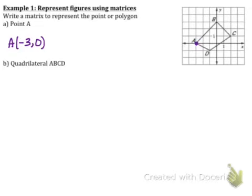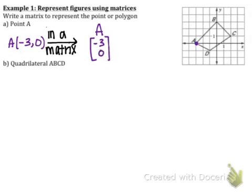So how would we write this in matrix form? Point A written in a matrix has two brackets, and the negative three goes on top and the zero goes on bottom. We took the x and the y from point A — x is negative three and y is zero — and wrote it vertically. X goes on top and y goes on bottom, and the letter of the point goes above the coordinates. That is how you write a point into matrix format.